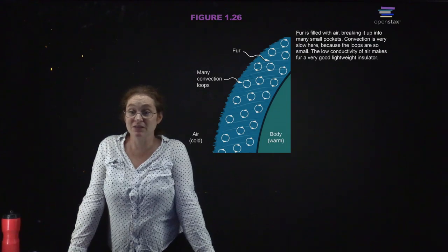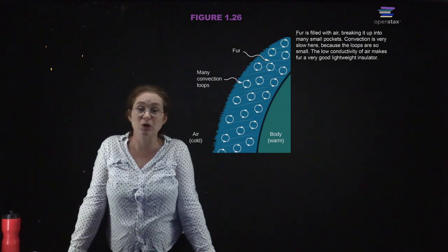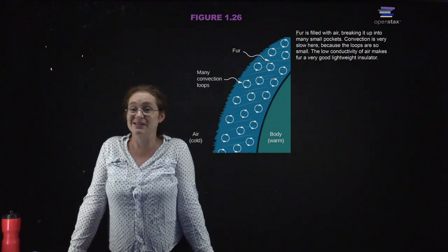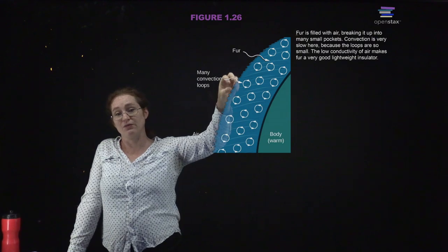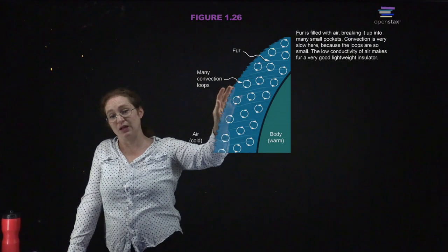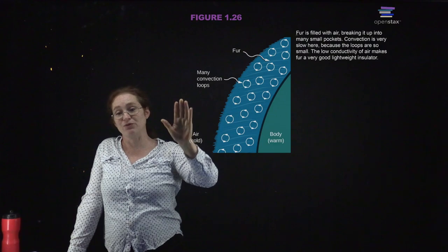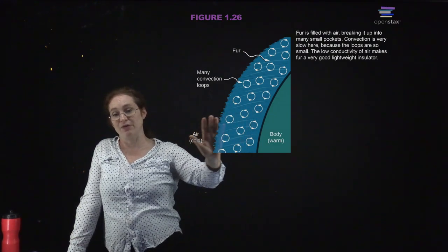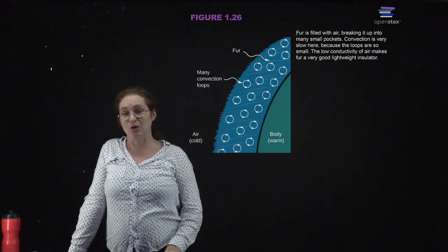You can prevent heat transfer through insulation. An example of how insulation works is fur: it traps air inside, creating small pockets of convection that prevent air from moving all the way from outside to the body. This prevents large-scale convection from reaching the inside of the body, which is how fur works to insulate.